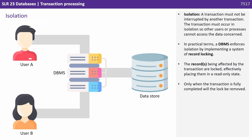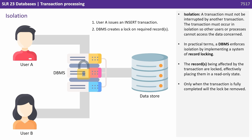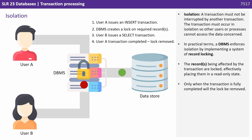Isolation means a transaction must not be interrupted by another transaction. The transaction must occur in isolation so other users or processors cannot access the data concerned. In practical terms, a database enforces isolation by implementing a system of record locking, placing the affected records in a read-only state until the transaction is fully completed.